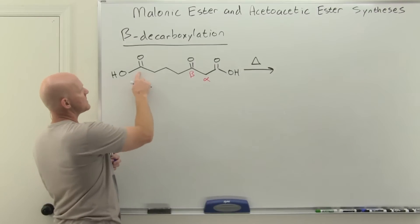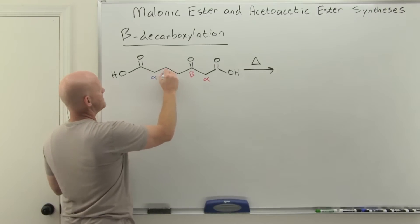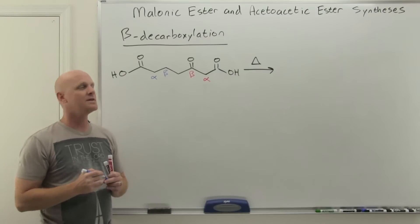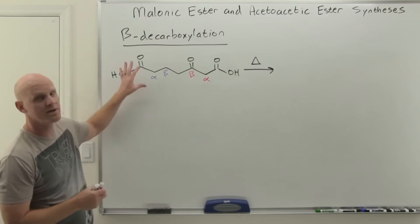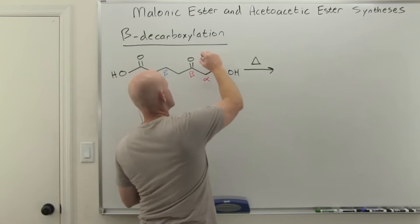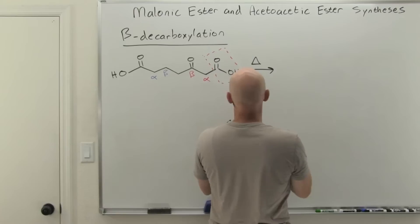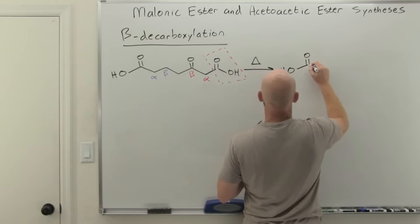On the other side, however, this carboxylic acid, alpha, beta, there's no carbonyl at that beta position, and we don't have this same lack of stability associated with this one as we heat it. As a result, we're going to lose this carboxylic acid group right here when we heat this up.